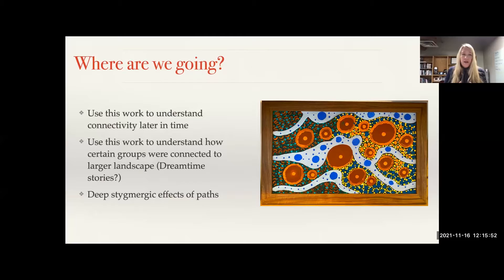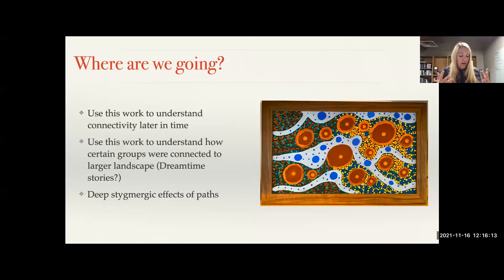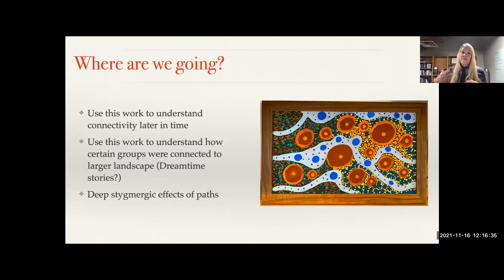The team is working to understand connectivity as we move out of the last glacial maximum and into the Holocene — how certain groups were connected to a larger landscape. We see these pathways, these trade routes where people were linking themselves across this larger landscape. I think about Ben Fitzhugh's work looking at long-scale stories connecting people in the Kuril Islands — making sure that if something happens, you have people you can connect with, even if your last contact was four or five generations ago. There are stories that link Aboriginal people on the landscape, and there are deep stigmergic effects visible in our models.